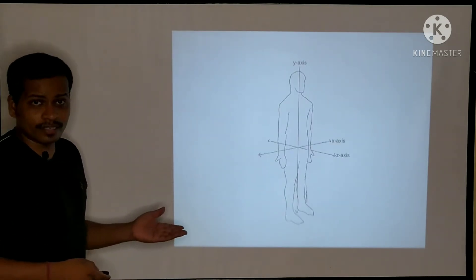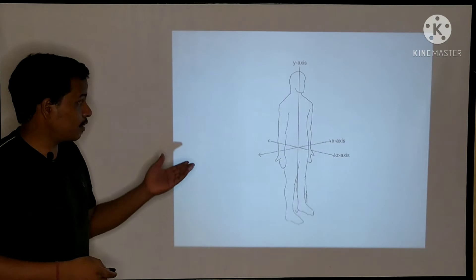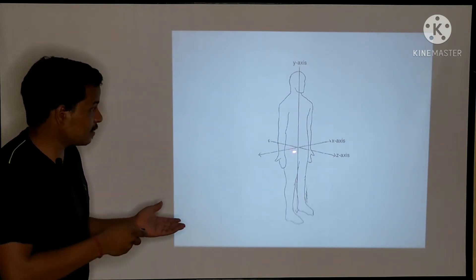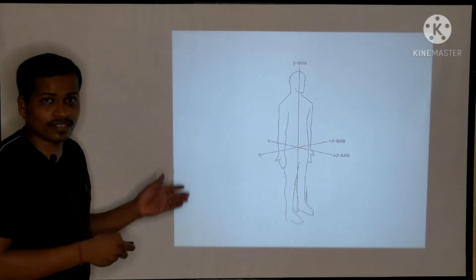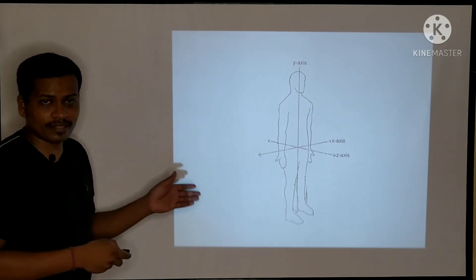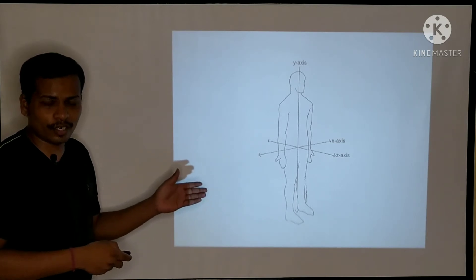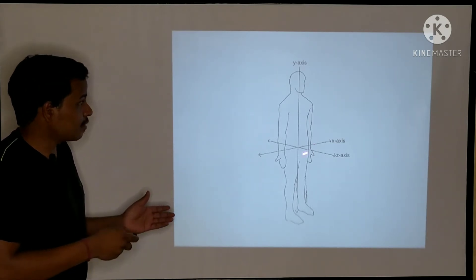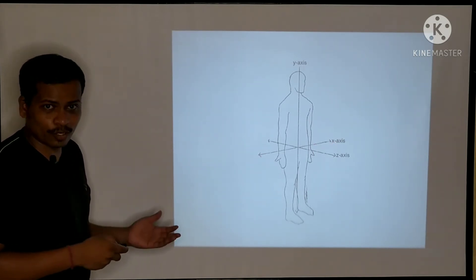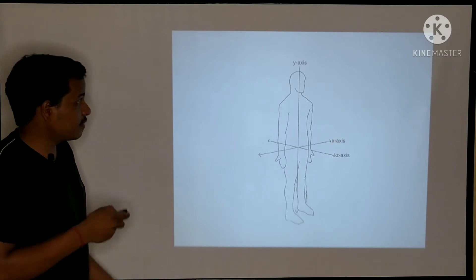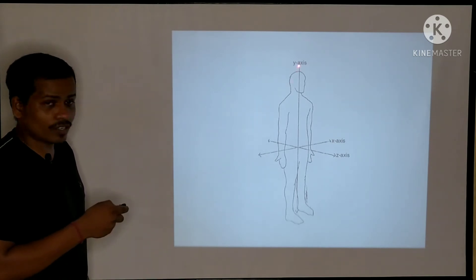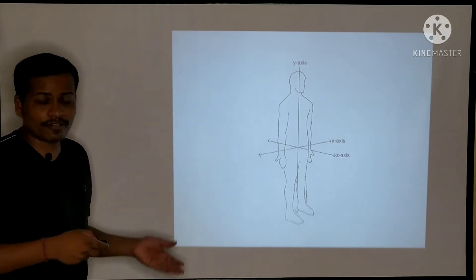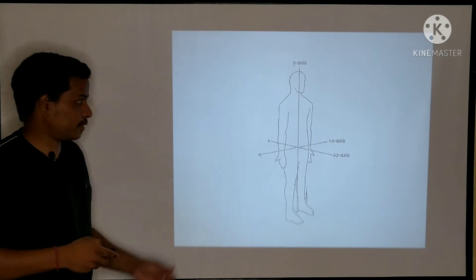This picture explains the origin of the axes. This point is where the center of mass is located, anterior to the second sacral vertebra. This is the X-axis running from side to side, this is the Y-axis which runs up and down, and this is the Z-axis which runs from front to back.